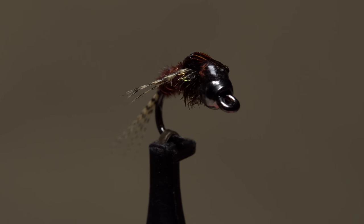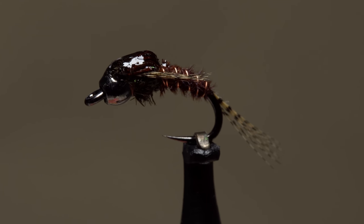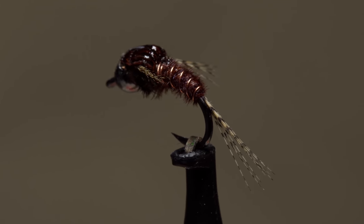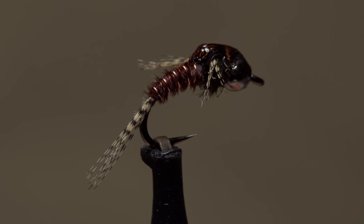I call this fly the DPD Nymph. It reasonably imitates a range of mayfly nymphs, and because of its weight and its relatively slim profile, sinks super fast. It makes for an excellent anchor fly.